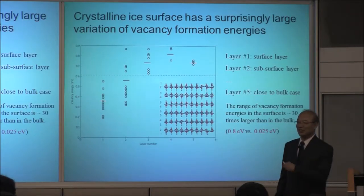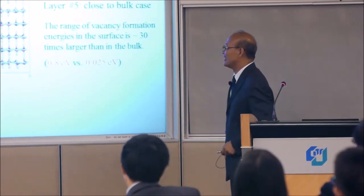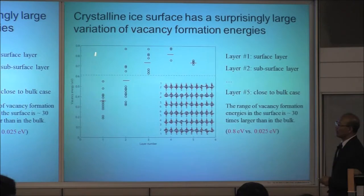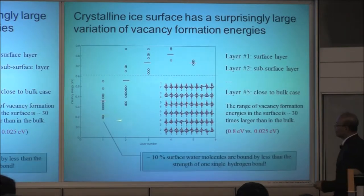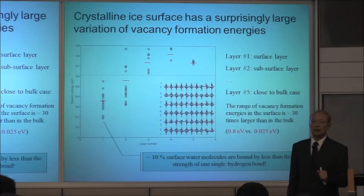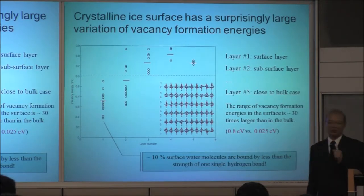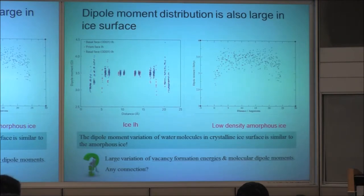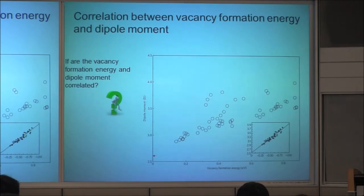So from surface to inside, the formation energy becomes more and more difficult. It becomes more difficult to form a vacancy on the surface — you can form a vacancy very easily on the surface, but inside you are bound from every direction. What is even more interesting is that 10% of the surface energy is even weaker than the hydrogen bond. So you can imagine there are lots of vacancies on the surface, much more than you think. I compared with the amorphous ice and the non-crystal ice surface, and it is the same.